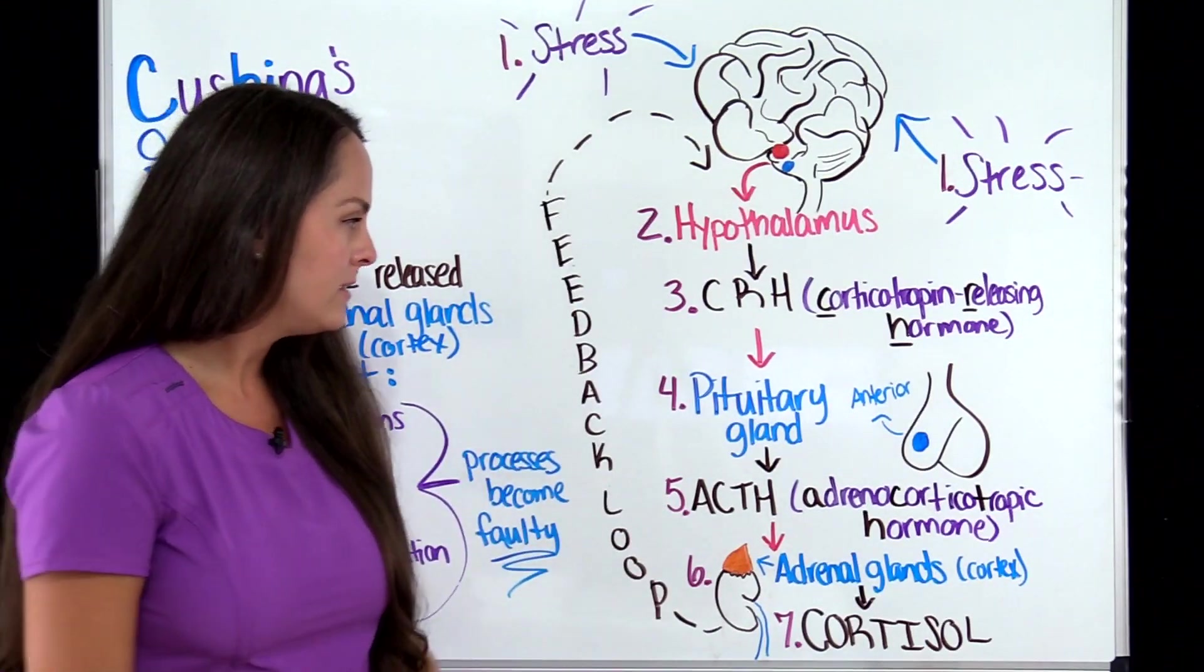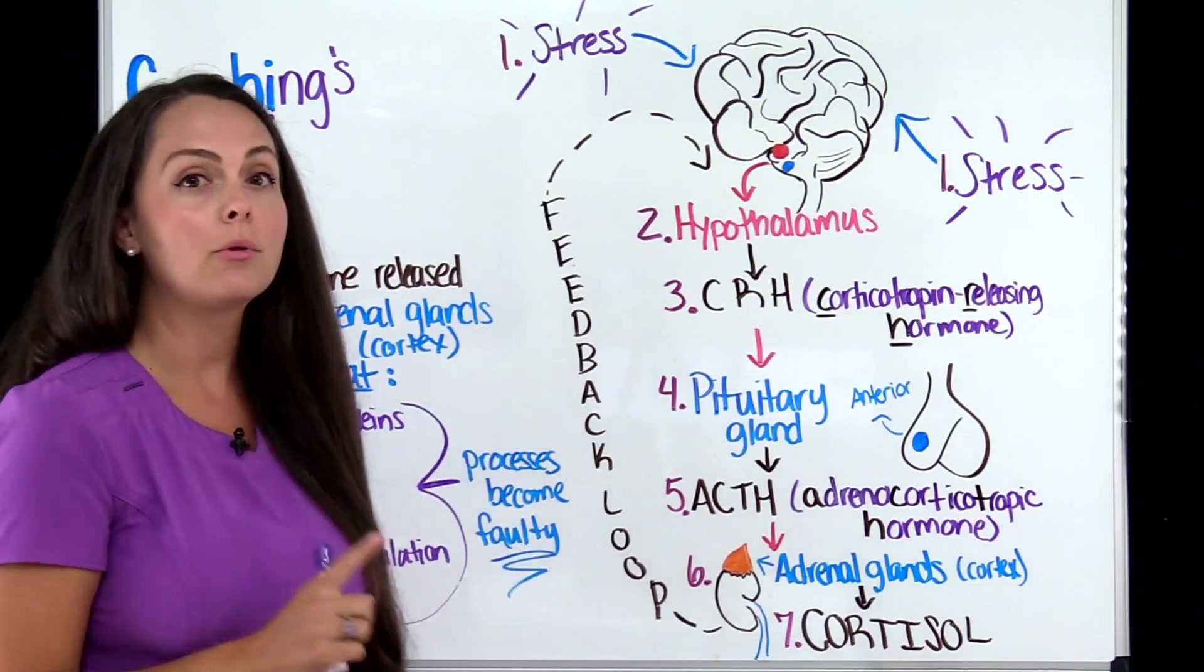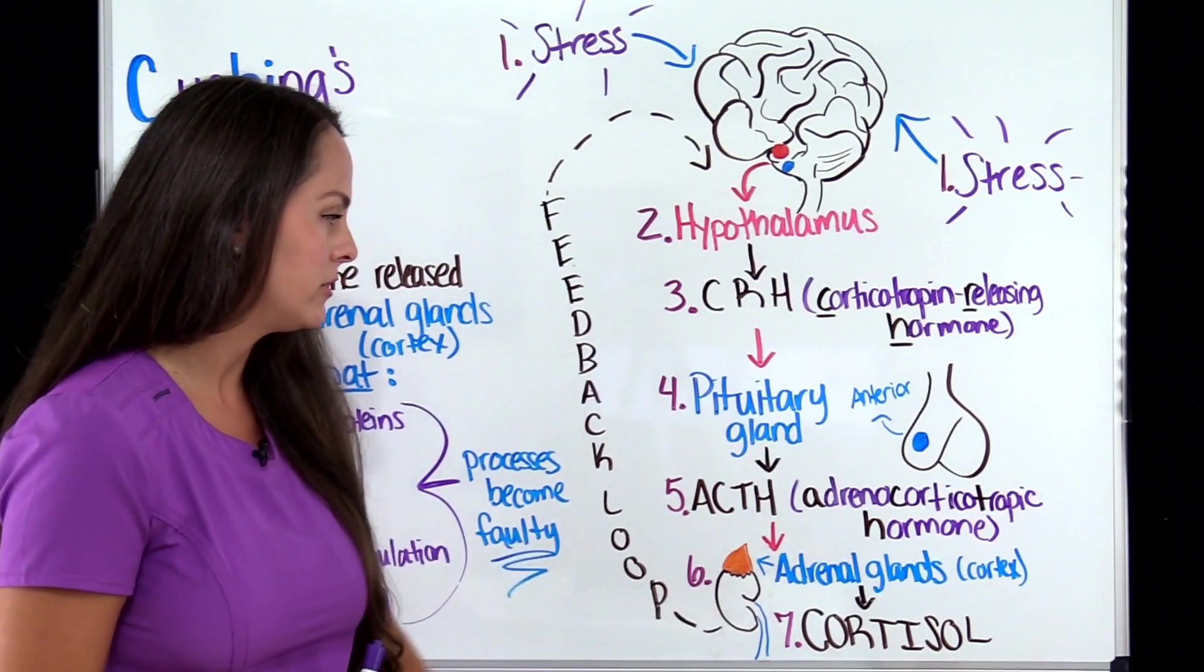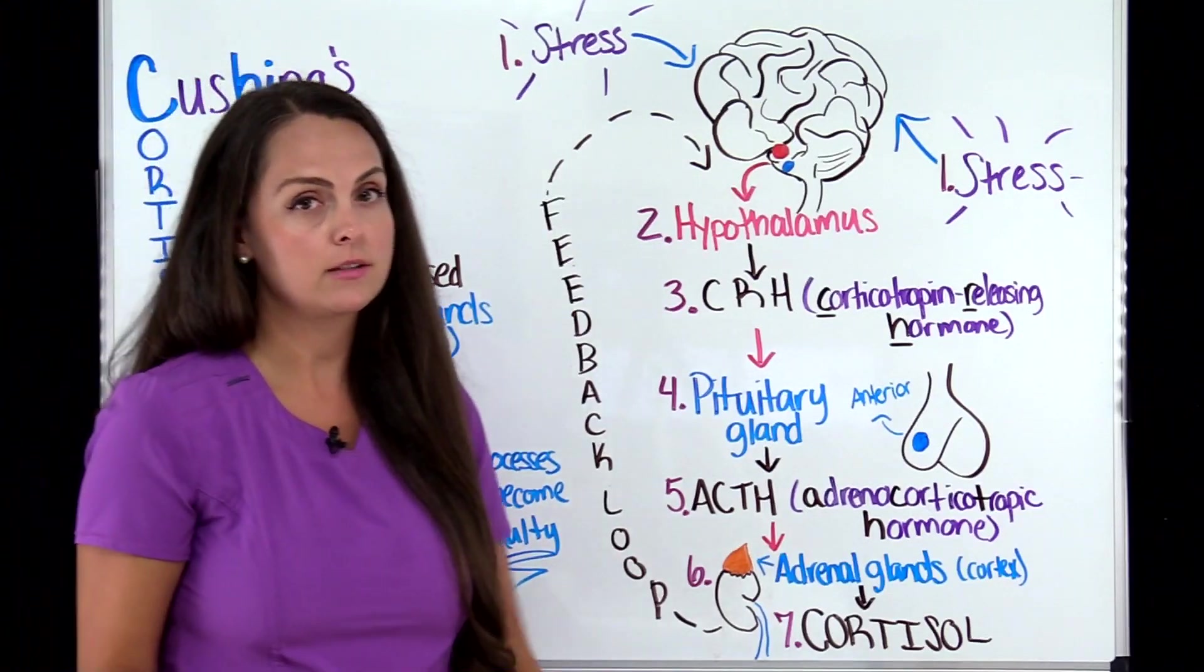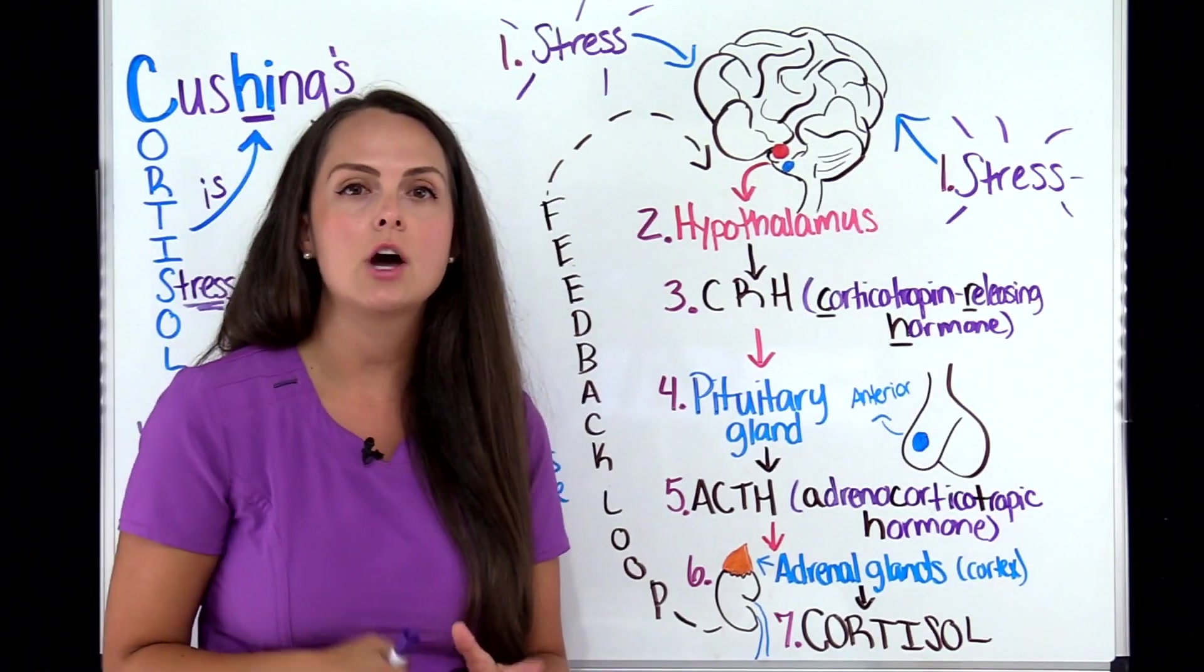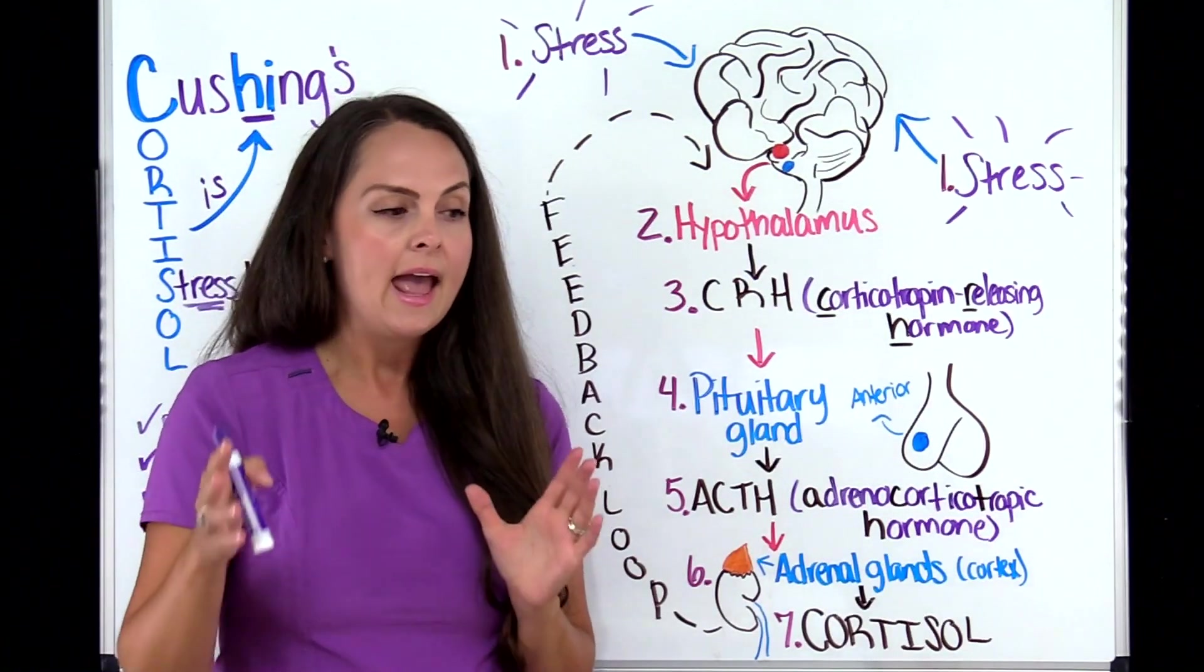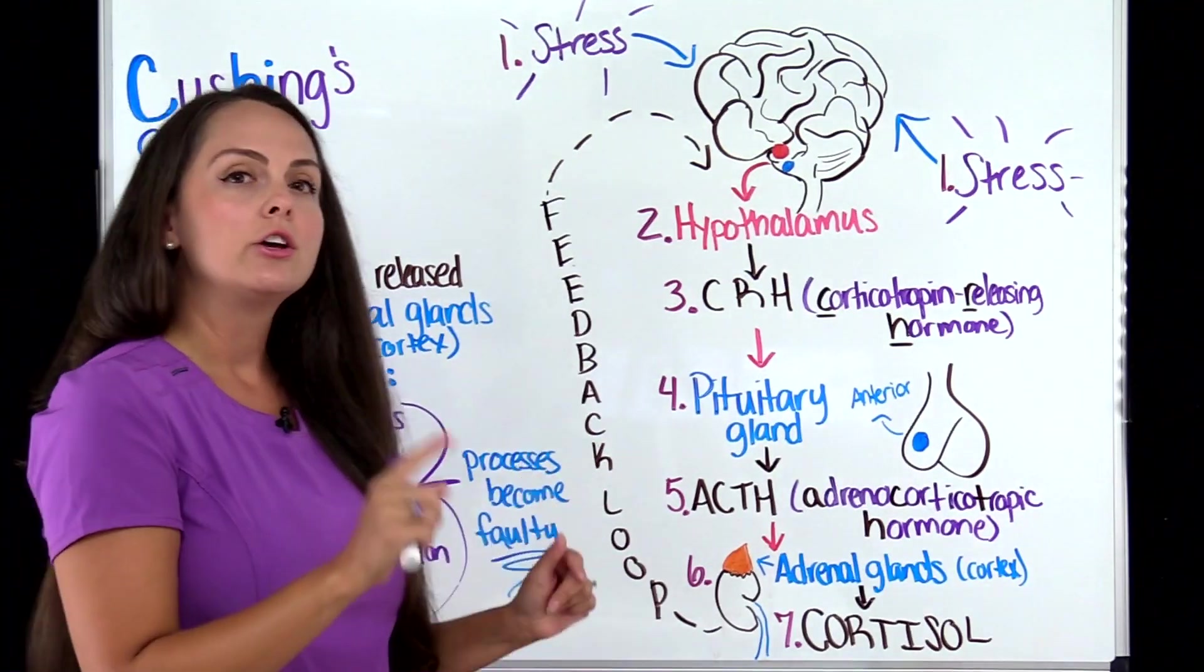Now on the flip side, we could have a properly working pituitary gland, but the problem is with our adrenal glands. They have tumors that's causing it to just secrete too much cortisol, or the patient is overusing corticosteroids for a long period of time. Therefore, that is found in Cushing's syndrome.